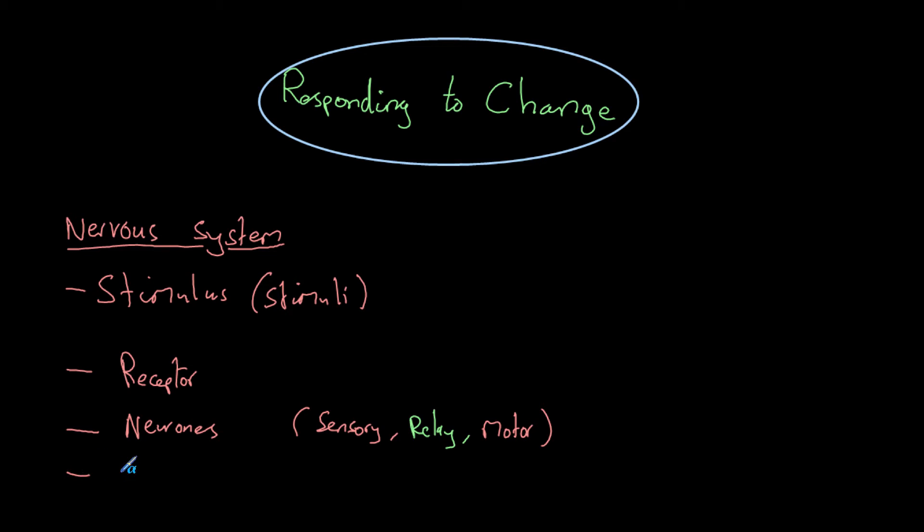Something else important is the CNS or the central nervous system. The central nervous system is made up of the spinal cord and of course the brain. So the central nervous system is going to process the information, decide what to do and then send a signal back out. And that is going to be via a motor neuron.